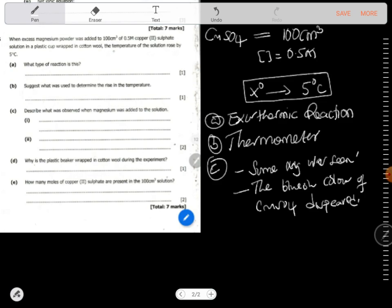Why is the plastic beaker wrapped in cotton during the experiment? Why do you think it is wrapped? This is to prevent loss of heat or gain of heat from the surrounding, can be to or from the surrounding.